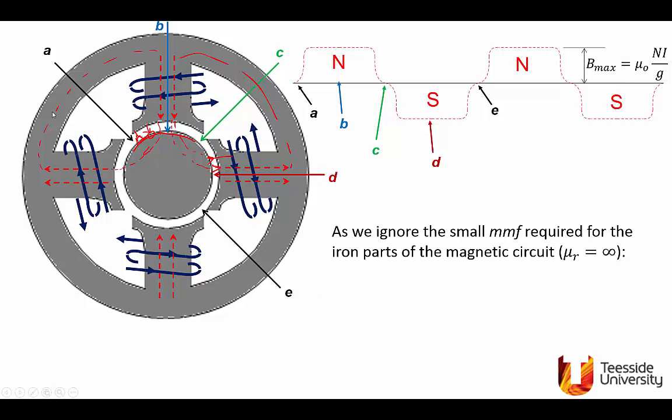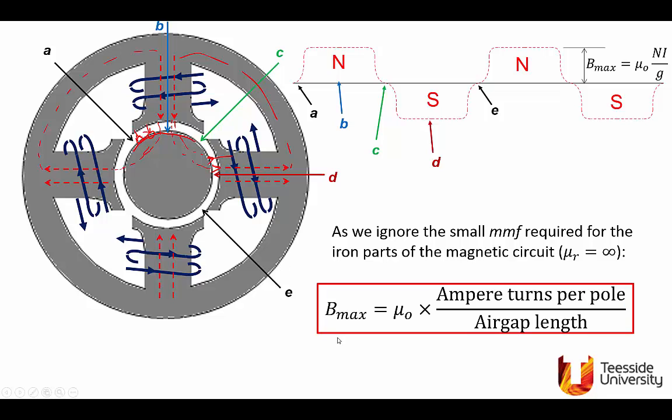If we ignore the reluctance of the iron, and I showed you a couple of slides earlier, justification to this. You remember the case when we considered a flux path in the iron, which is 300 mm, and the air gap was 5 mm, and we found that if we ignore all the reluctance due to the iron, which has very high, several thousand of relative permeability, we found that the flux calculations will not be affected too much by ignoring the reluctance of the iron. If we ignore the magnetic motive force required for the iron parts, i.e., we assume mu r for the iron is infinity,